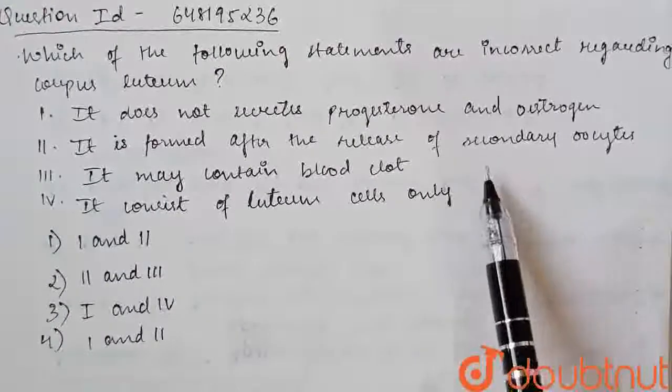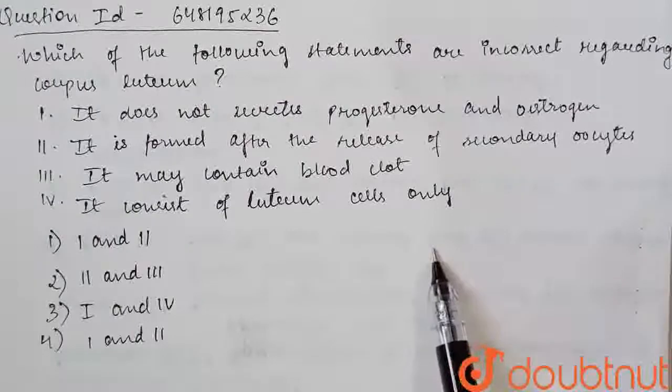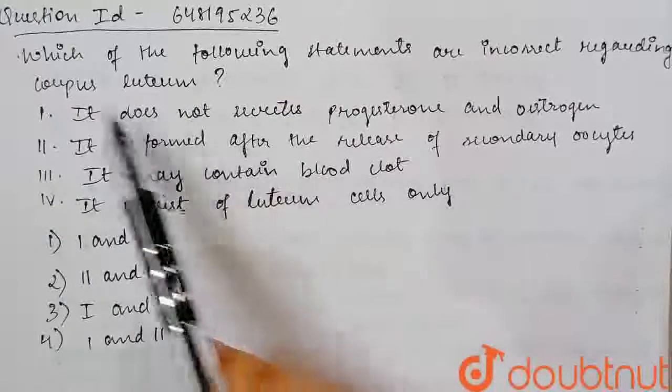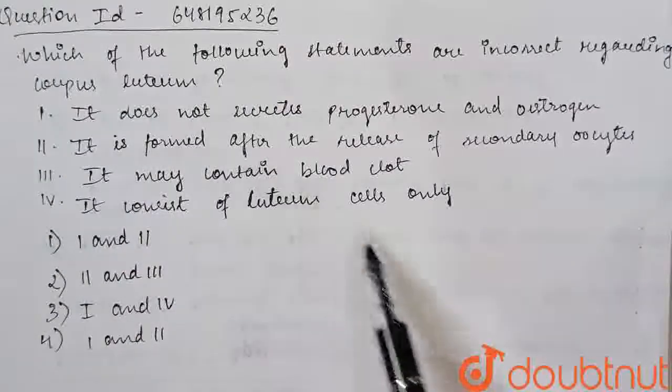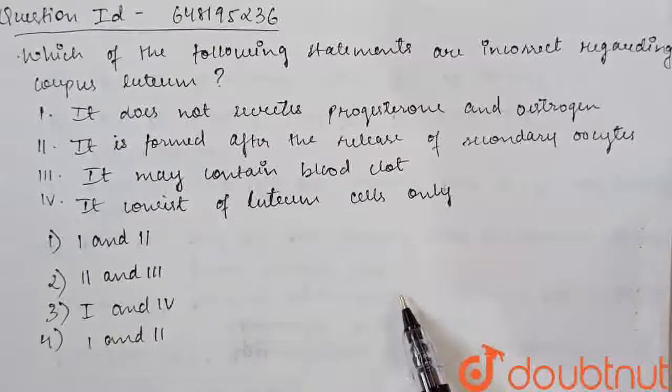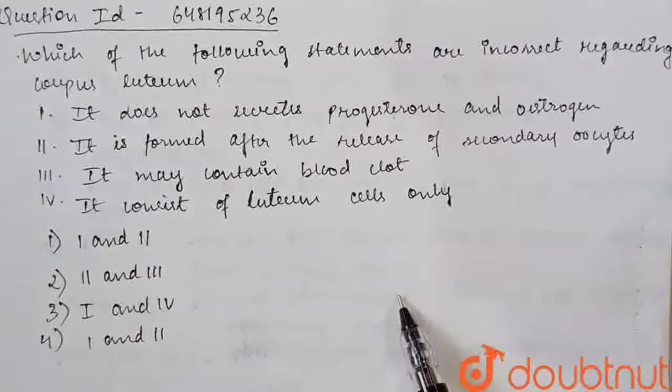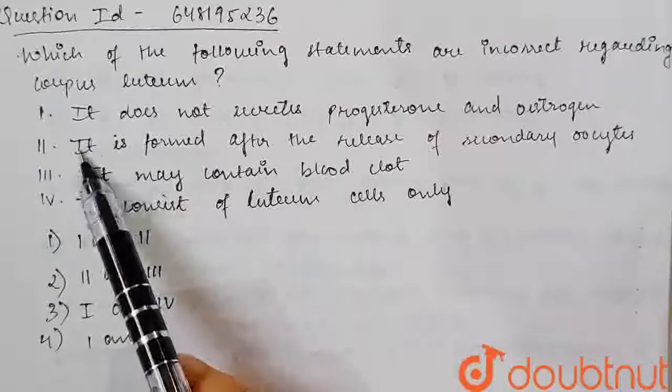This is a correct statement because secondary oocyte is released when the graafian follicle ruptures. So this corpus luteum, how it is formed? It is formed by the help of only the graafian follicle. So this is a correct option.